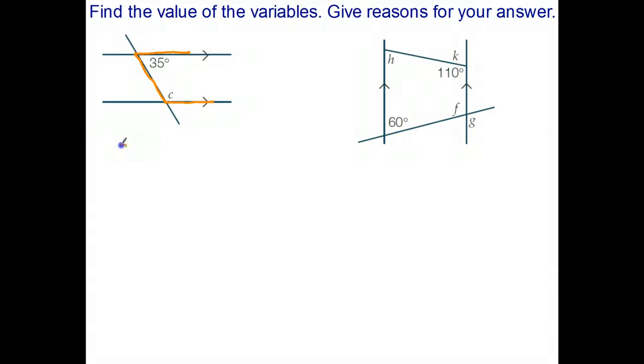Therefore I can say C equals 180 take 35. 180 take 35, or 180 take 30 is 150, take 5 is 145 degrees. And that is the C rule - co-interior angles add to 180.